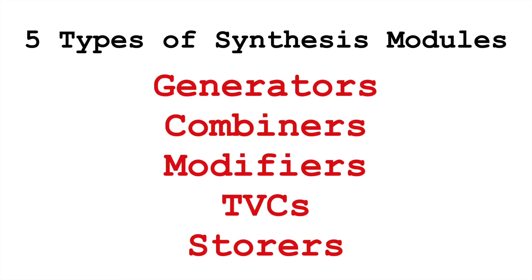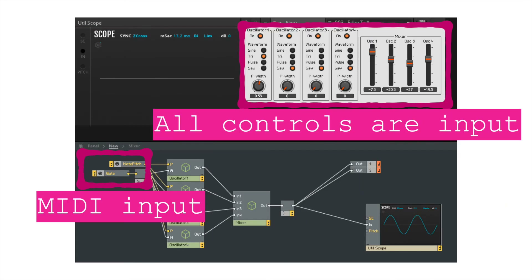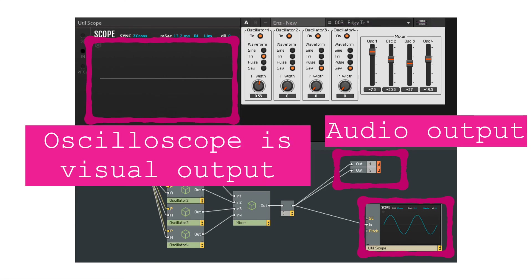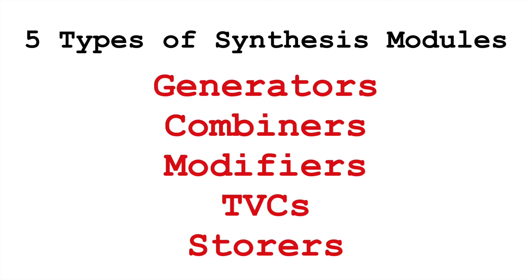Now, some people would add to this list input and output — we don't have any way for humans to interact with this system yet, nor do we have a way to get our sound or visuals out. But thinking about the synthesis portion of a synthesizer, I use these five categories: generators, combiners, modifiers, time-variant controllers, and storers.